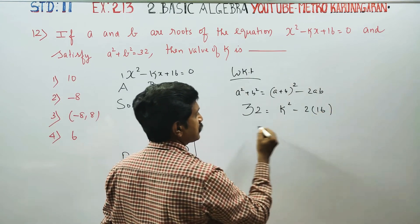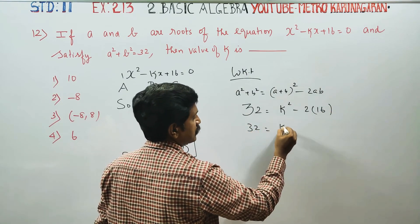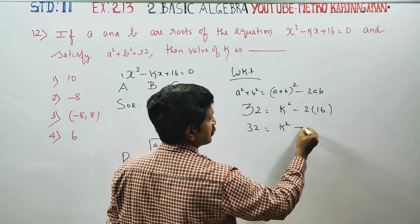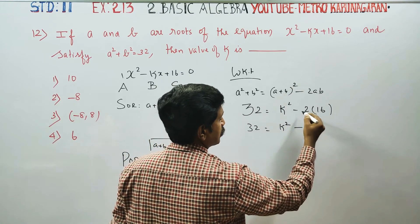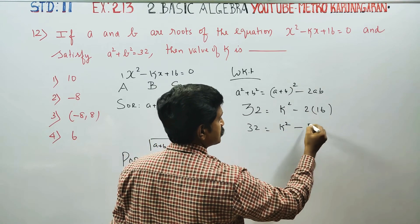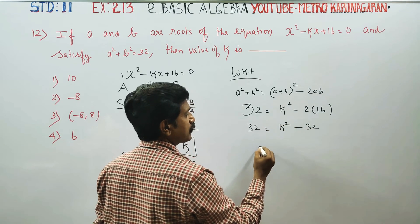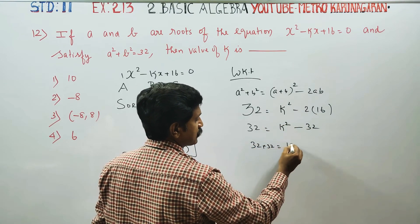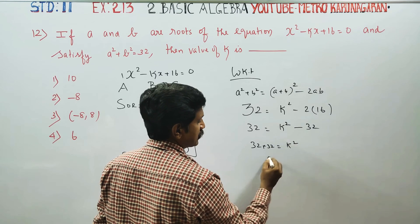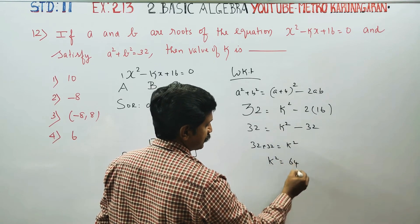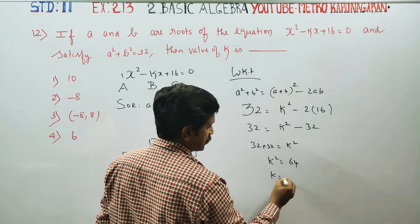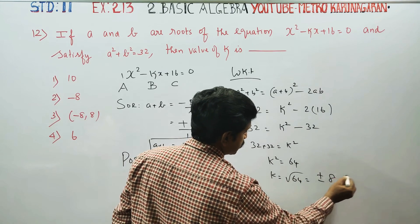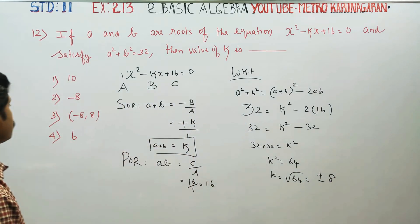So, 32 = k² - 2 × 16, which gives 32 = k² - 32. Therefore, k² = 32 + 32 = 64. Taking the square root, k = ±8.